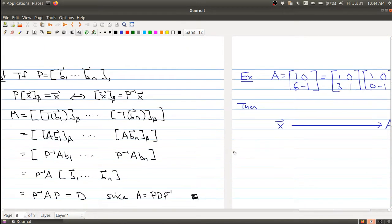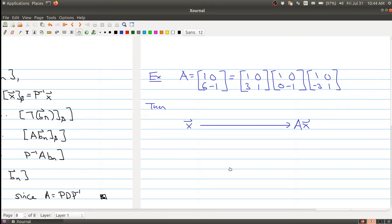So let me just illustrate this with one further example. This matrix should look familiar because it's appeared, I think, in the last three lectures now. We have the matrix A, which is 1, 0, 6, negative 1, and here's the factorization or the diagonalization.